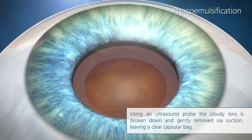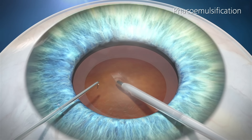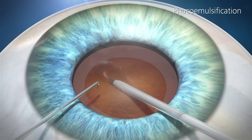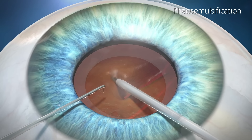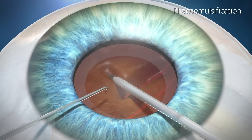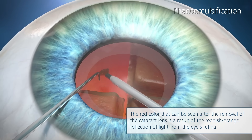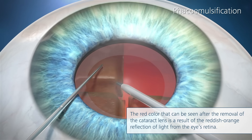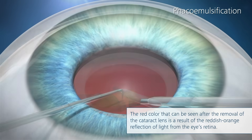Using an ultrasound probe, the cloudy lens is broken down and gently removed via suction, leaving a clear capsular bag. The red color that can be seen after the removal of the cataract lens is a result of the reddish-orange reflection of light from the eye's retina.